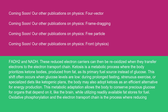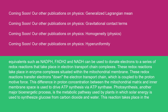Oxidative phosphorylation and the electron transport chain is the process where reducing equivalents such as NADPH, FADH2, and NADH can be used to donate electrons to a series of redox reactions that take place in electron transport chain complexes. These redox reactions take place in enzyme complexes situated within the mitochondrial membrane, transferring electrons down the electron transport chain, which is coupled to the proton motive force. This difference in proton concentration between the mitochondrial matrix and inner membrane space is used to drive ADP synthesis via ADP synthase.